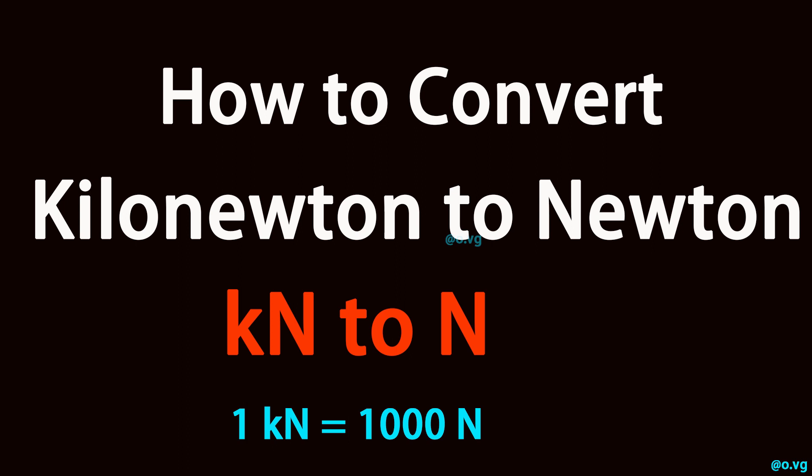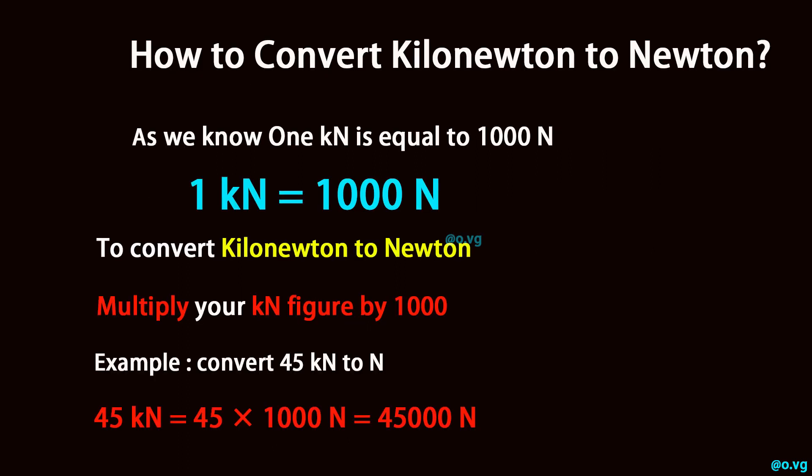How to convert kilonewton to newton. As we know, one kilonewton is equal to one thousand newtons. To convert kilonewton to newton, multiply your kilonewton figure by one thousand.